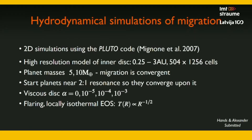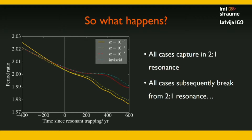To get a handle on this and understand better what's going on, we set out to simulate this convergent migration phenomenon using the Pluto code. We did high-resolution models of protoplanetary disks with two planets: a 5-Earth-mass planet and a 10-Earth-mass planet. Initially, these two planets are just outside the 2-to-1 resonance, so the period of the 10-Earth-mass planet is about twice that of the 5-Earth-mass planet. The 10-Earth-mass planet will then catch the 5-Earth-mass planet and capture it in the 2-to-1 resonance. We used various different disk viscosities and a flaring locally isothermal equation of state.